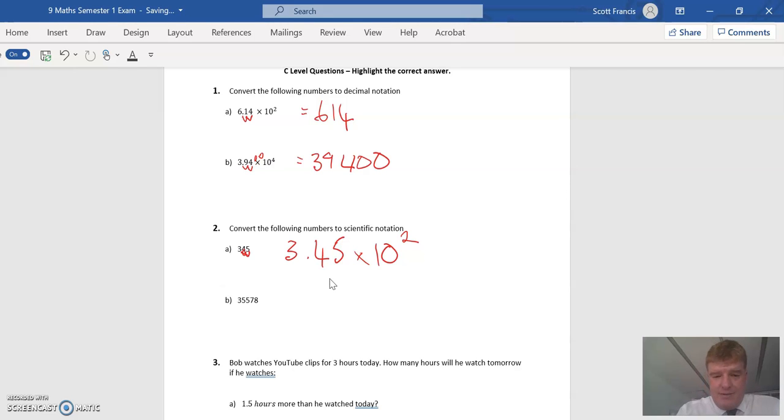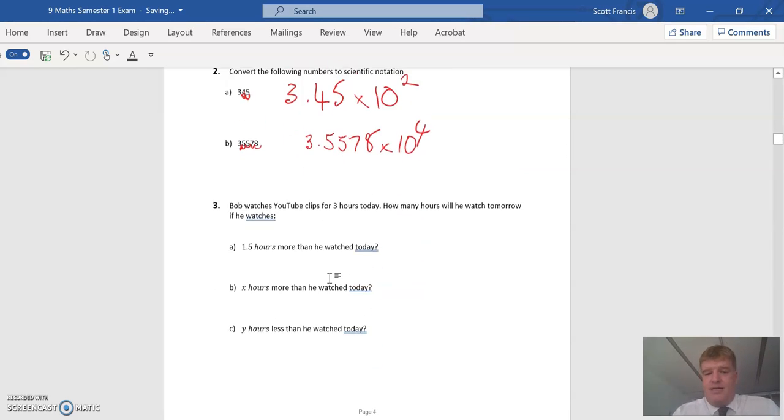In this case we want to get it to 3.5578, so we have to move the decimal place one, two, three, four. So that's 3.5578 by 10 to the 4. Or we might remember it's in the 10,000 column which is also 10 to the 4.